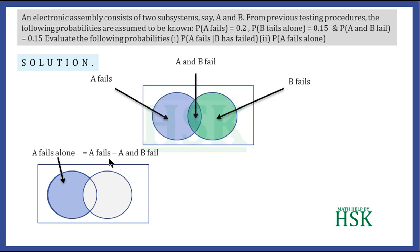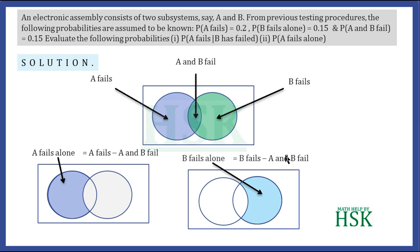So, A fails alone equals P(A fails) minus P(A and B both fail). That is, the probability of A failing alone equals the probability that A fails minus the probability that A intersection B fails. Similarly, B fails alone equals P(B fails) minus P(A and B both fail).